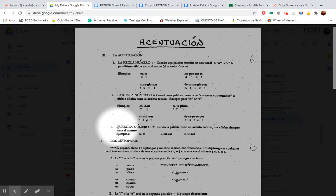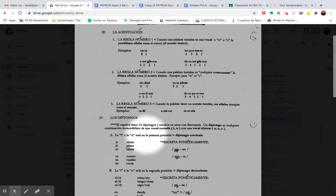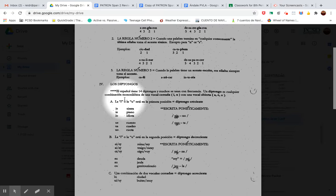And then you got la regla numero tres. Same thing. You're going to translate this sentence. Cuando la palabra tiene un acento escrito, esa sílaba siempre toma el acento. And then you will look at the examples here.